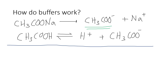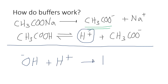What if you add OH⁻ ions, which is what happens if you add a base? The OH⁻ ions will react with the H⁺ ions to form water, which means the concentration of H⁺ ions starts to drop. But what the equilibrium does is shift to the right-hand side to make more H⁺ ions to compensate for those that have been lost, hence the concentration of H⁺ ions remains relatively constant. And that's in a nutshell how buffers work, especially the acidic ones.